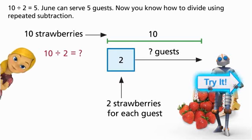Ten divided by two equals five. June can serve five guests. Now you know how to divide using repeated subtraction.